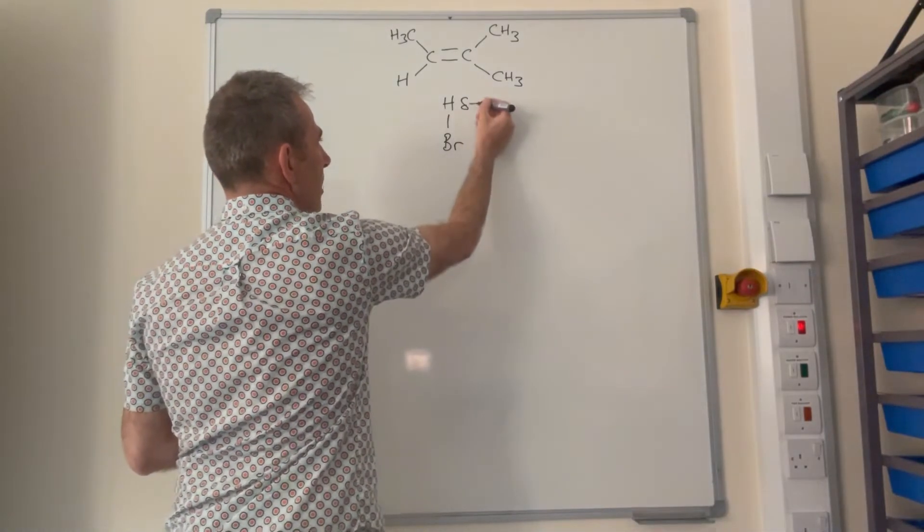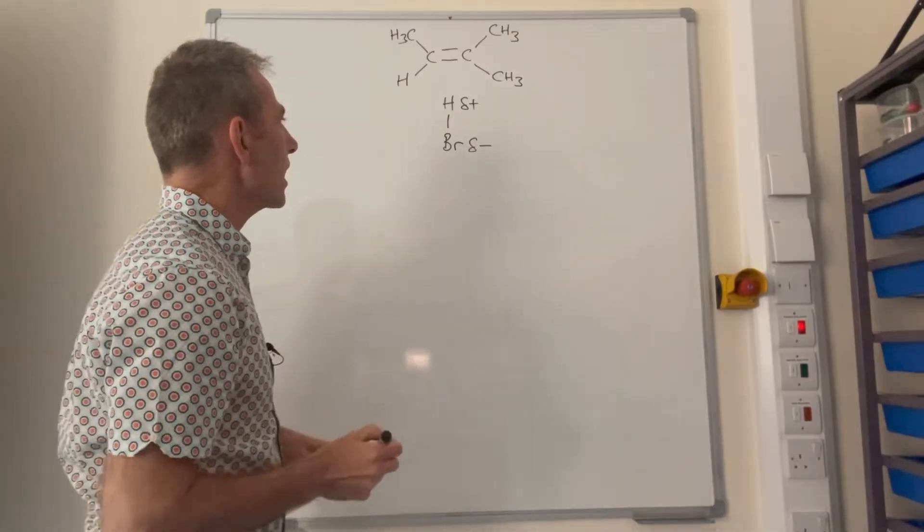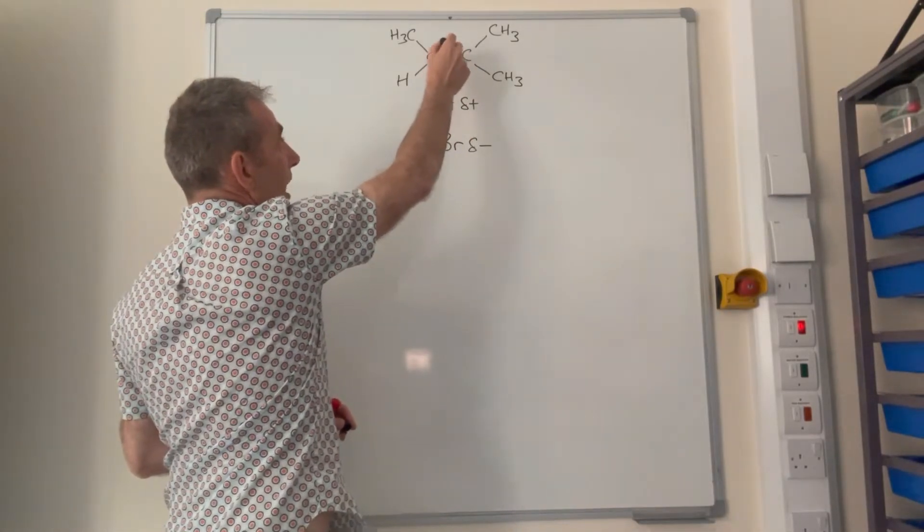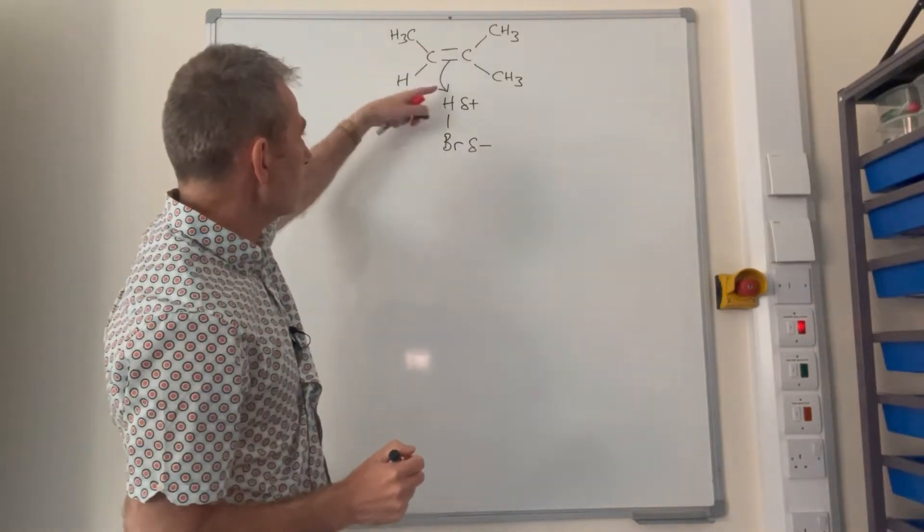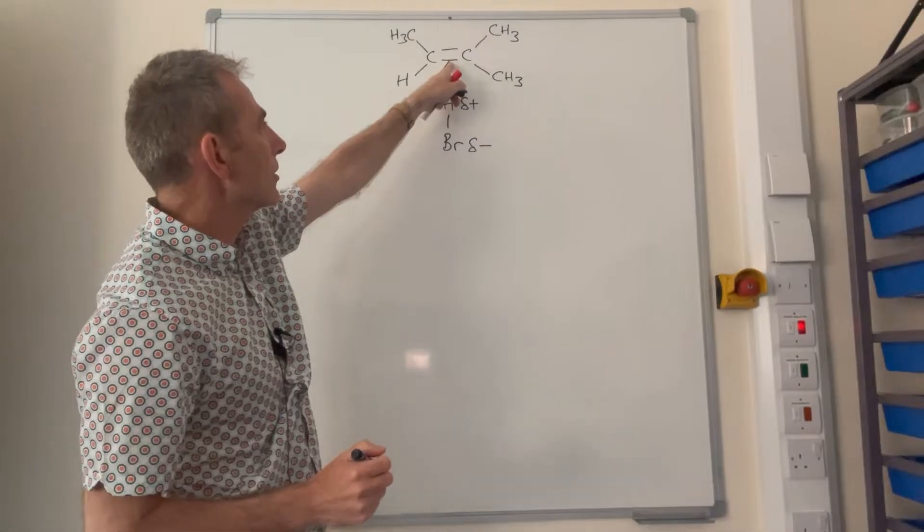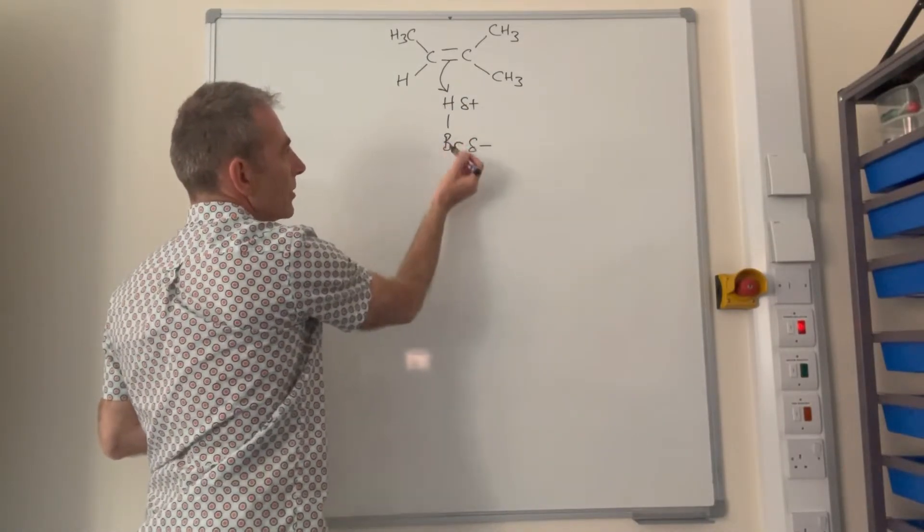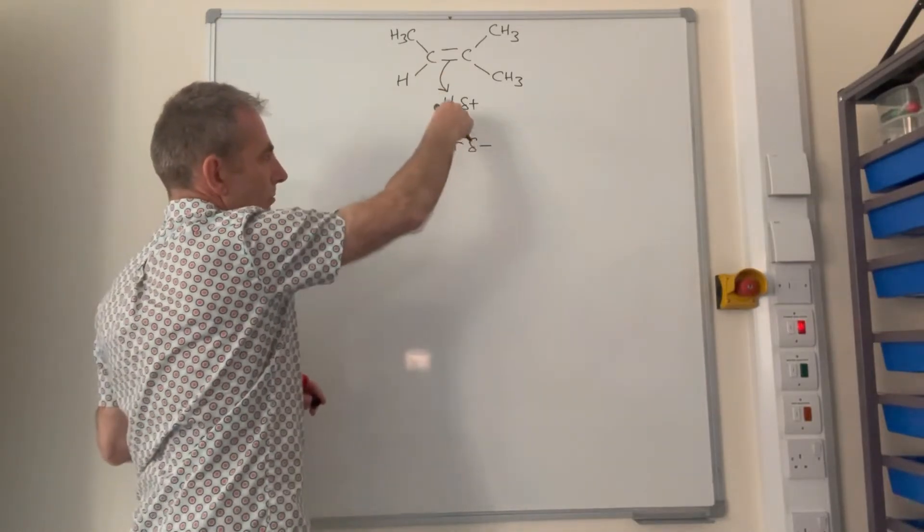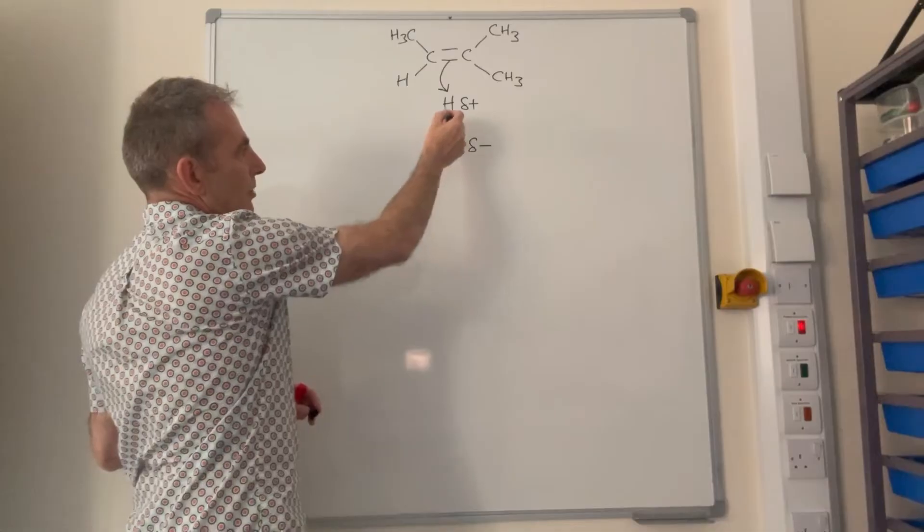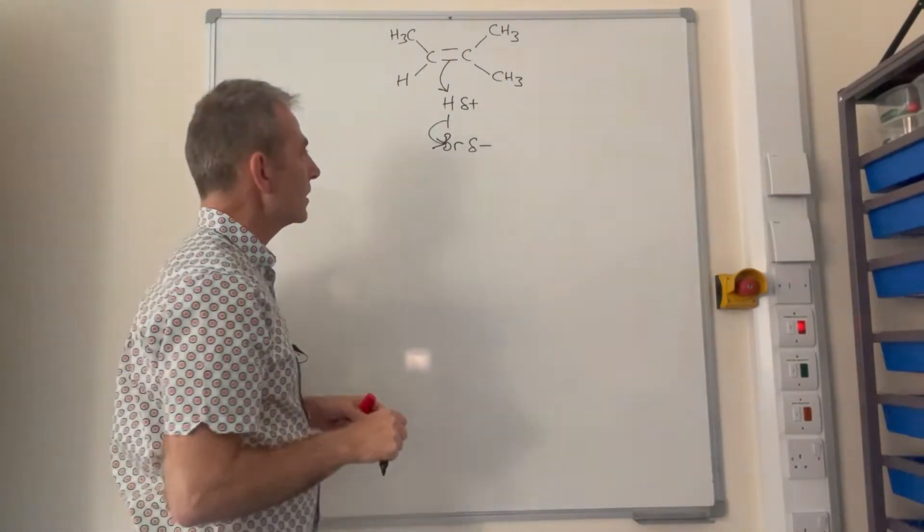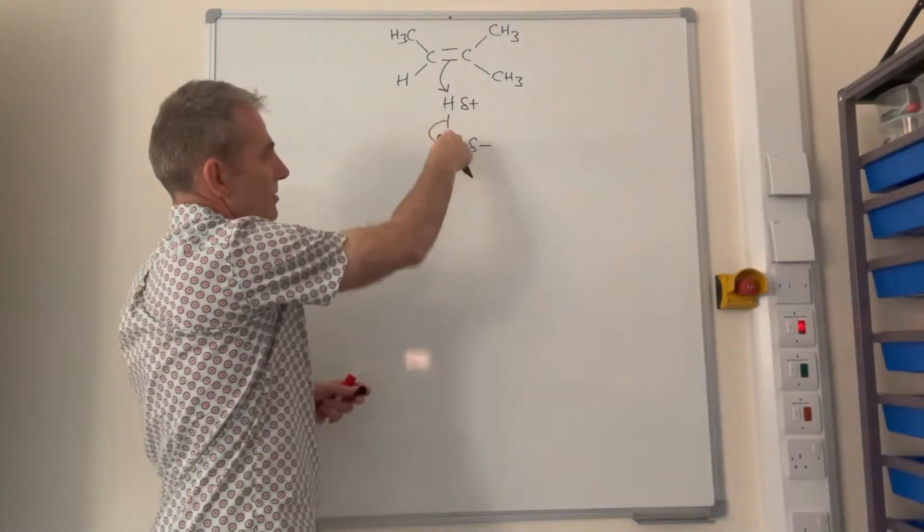So we need a dipole across the HBr bond, so slightly positive on the hydrogen, slightly negative on the bromine, and that's because bromine's more electronegative than hydrogen. So then a pair of electrons in the pi bond is attracted to that slightly positive hydrogen. So we show that by a curly arrow, just make sure that it goes from the middle of one of the bonds in the double bond and goes to that H delta plus. So the knock-on effect of that is the pair of electrons in the HBr bond, which are already sort of being pushed down or being pulled down towards the bromine, they're going to be repelled completely onto the bromine and it's going to break that HBr bond by heterolytic fission. So heterolytic fission is when a covalent bond breaks and one atom receives both of the electrons. So you can see that's what's happening in that bond there.